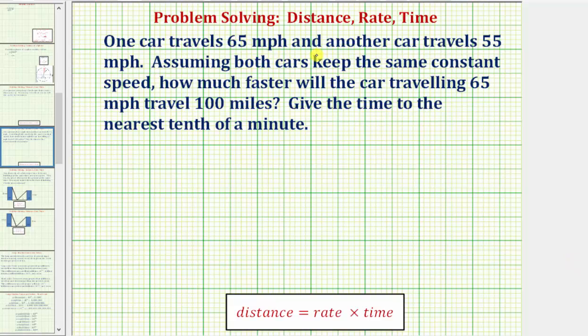One car is traveling 65 miles per hour, and another car is traveling 55 miles per hour. Assuming both cars keep the same constant speed, how much faster will the car traveling 65 miles per hour travel 100 miles? And we're asked to give the time to the nearest tenth of a minute.